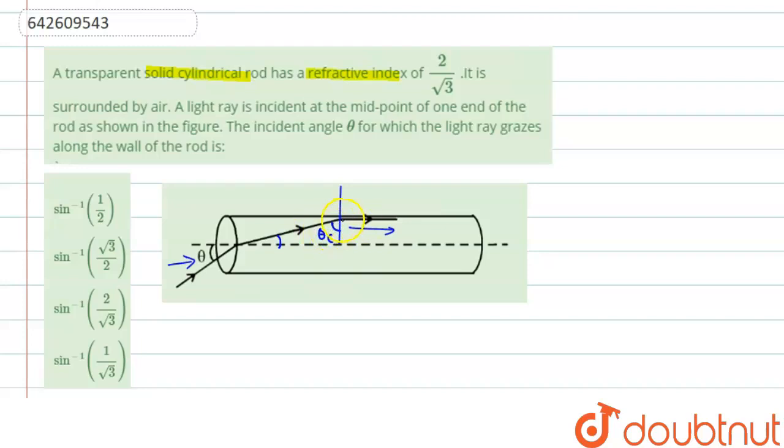That is the angle for which the ray will be parallel to the surface. So we need to find out this one. Then we can also find this one with the help of theta c. So using Snell's law, we can write for this case it is N1 sin I equal to N2 sin R.